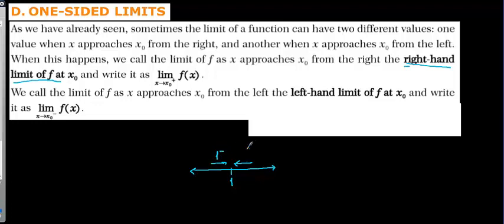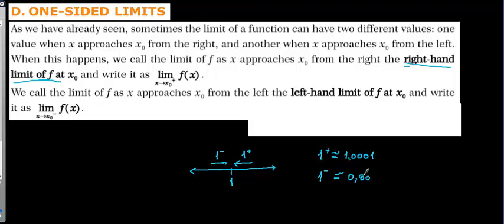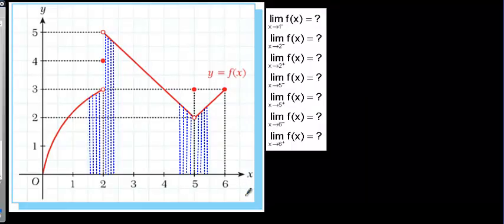So this is one from the negative side and this is one from the positive side. One positive means approximately 1.0001, which is a number very close to one. One negative means from the negative side of one, a very close number — approximately 0.99.